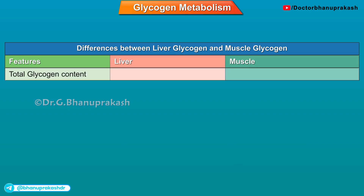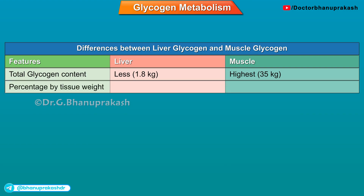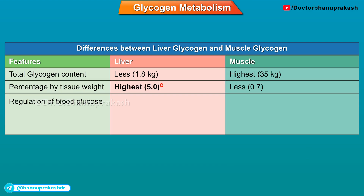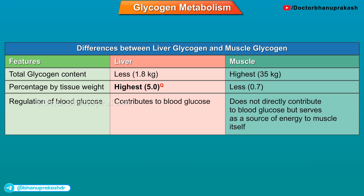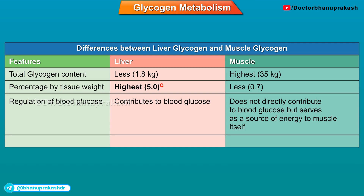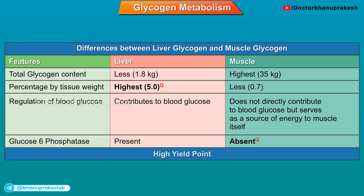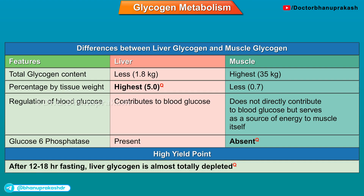The total glycogen content in the liver is less than 1.8 kg, which is highest in the muscle at about 35 kg. The percentage by tissue weight is highest in the liver at about 5%, which is less in the muscle at about 0.7%. Regarding regulation of blood glucose: in the liver, glycogen contributes to blood glucose, whereas in the muscle, it does not directly contribute to blood glucose but serves as a source of energy to the muscle itself. Glucose-6-phosphatase is present in the liver but absent in the muscle.